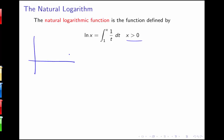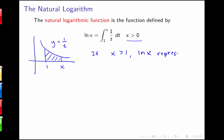How we can interpret this depends a little bit on the values of x. We have this curve y equals 1 over t, and we're looking at the area under the curve from 1 to x. If x is greater than 1, then ln of x represents the area under the curve y equals 1 over t, from t equals 1 to t equals x.